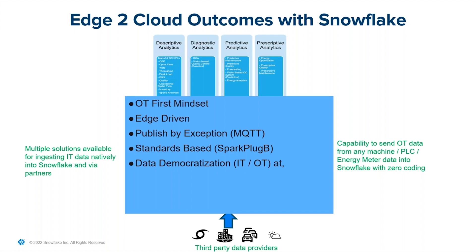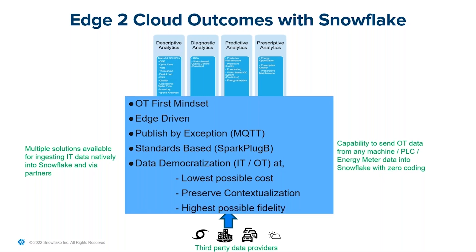Data democratization has to happen at scale — no coding at the edge, at the lowest possible cost. We achieved this using Snowpipe Streaming, which is a fraction of the cost compared to any other mechanism for sending data to the cloud. Today's approach drastically simplifies architecture, lowers cost, eliminates administration of multiple services, preserves contextualization, and enables data transfer to the cloud at the highest possible fidelity. Any possible data type at the edge can be modeled within the Snowflake platform, and data transmission happens to service link.